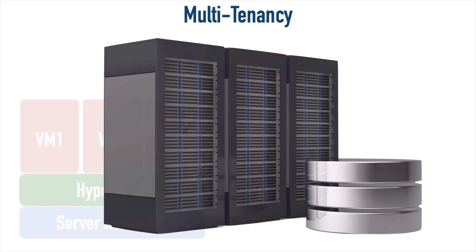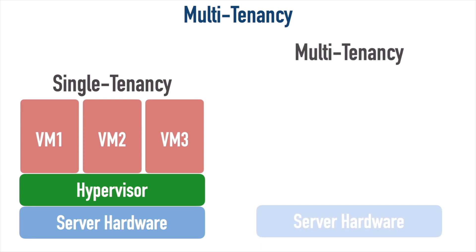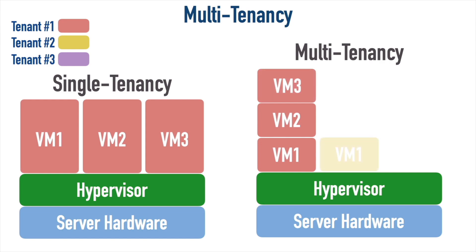In a single-tenancy example, we have a server with a hypervisor running on it — something like VMware ESXi — with different virtual machines running on top of that hypervisor, but all of them belonging to tenant one. In a multi-tenancy configuration, we still have the underlying server hardware with the hypervisor like VMware ESXi on top, but different tenants are isolated from one another. Tenant one has three VMs running, tenant two has a single VM, and tenant three has a couple of virtual machines running on that same underlying hardware platform.